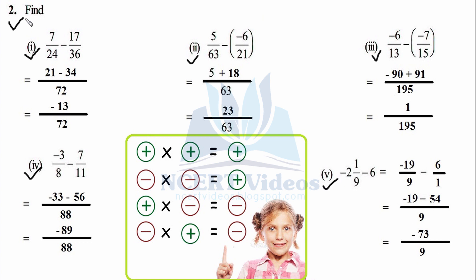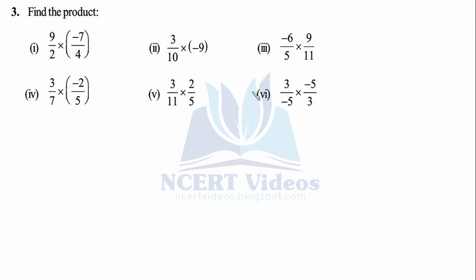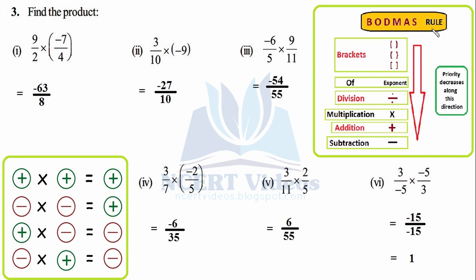Question 3: Find the product — that is, multiply the rational numbers. This is a good place to recall the BODMAS rule: B for Bracket, O for Of (multiplication), D for Division, M for Multiplication, A for Addition, S for Subtraction; priority decreases in that order. When multiplying rational numbers, multiply numerators together and denominators together separately.